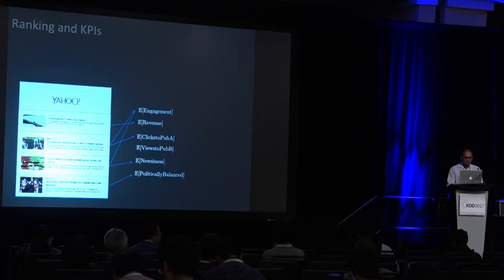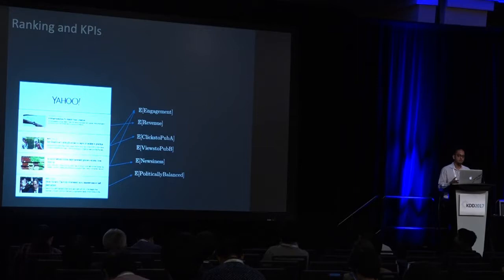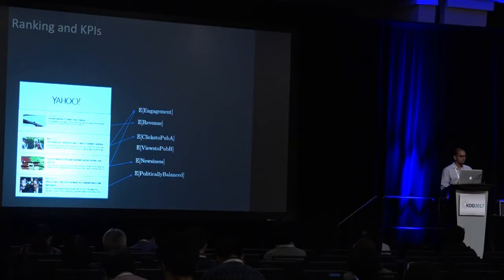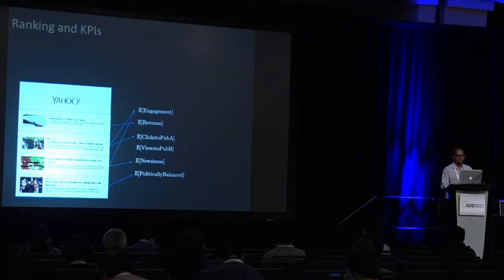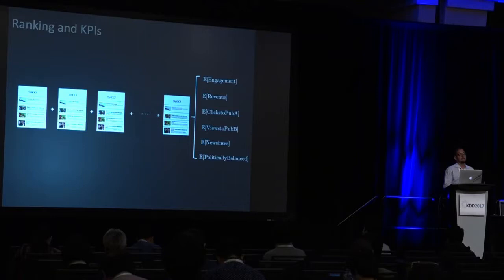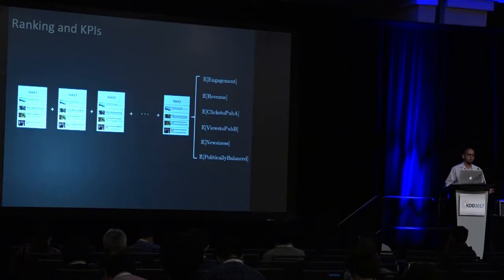Once you pick a ranking of items, you will have instantiated all your different expected KPI values — engagement, revenue, etc. — for that session. If you show a different ranking or permutation of these items, you get a different instantiation of these KPIs. How you choose your rankings affects what your trade-offs look like. The actual KPIs will be aggregated over many sessions shown in the course of a day, month, or whatever time period.